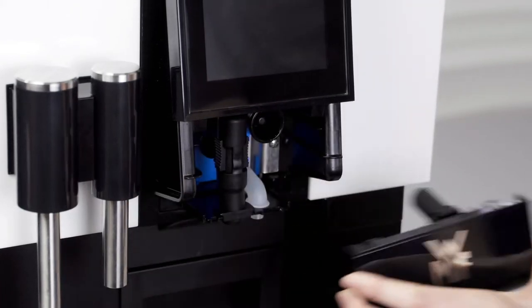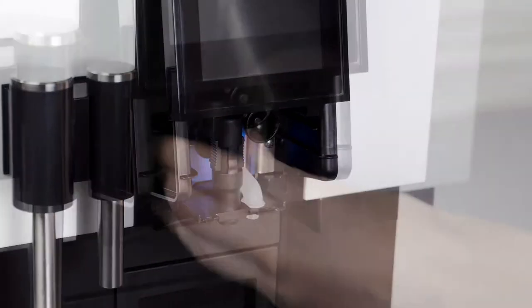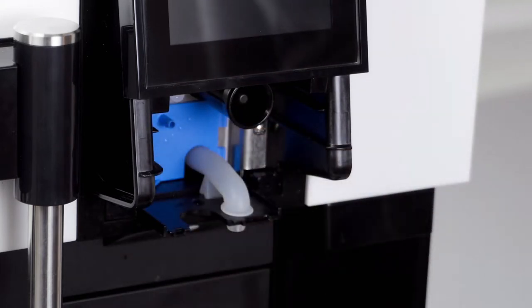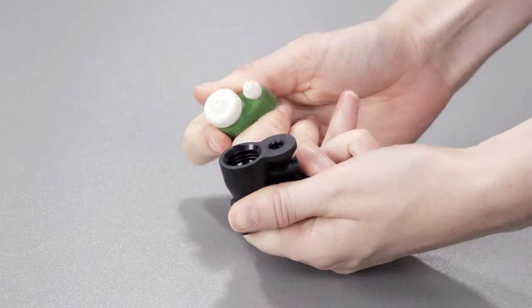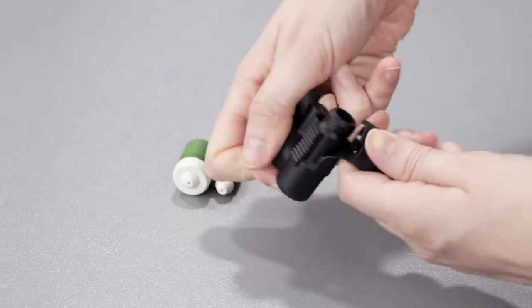Switch the machine off. Pull out the cover of the coffee spout and remove the milk foamer including the milk nozzle. Separate the milk nozzle from the milk foamer and open the milk foamer at the point provided.